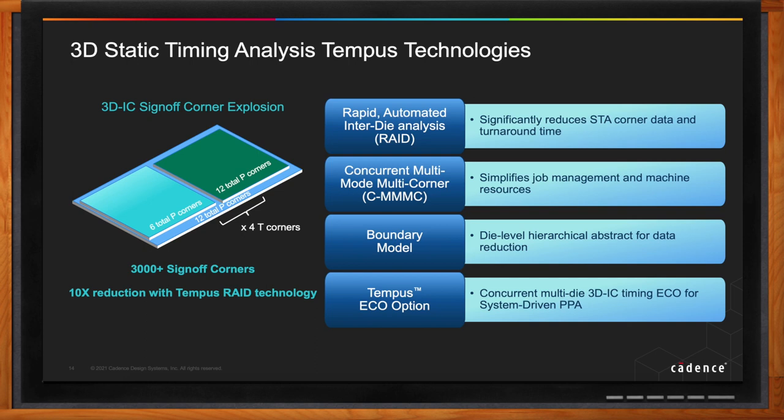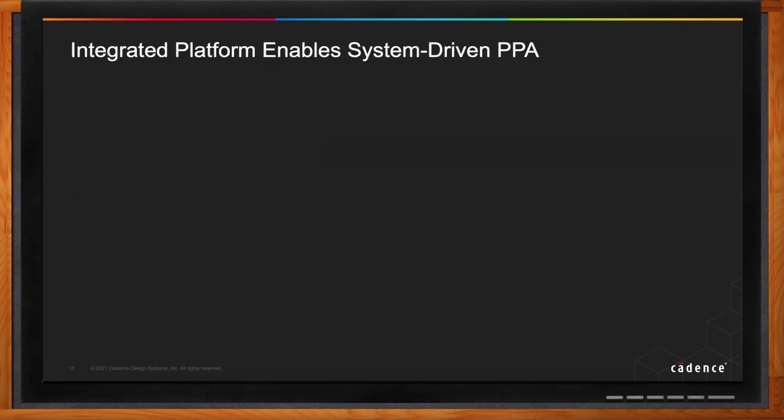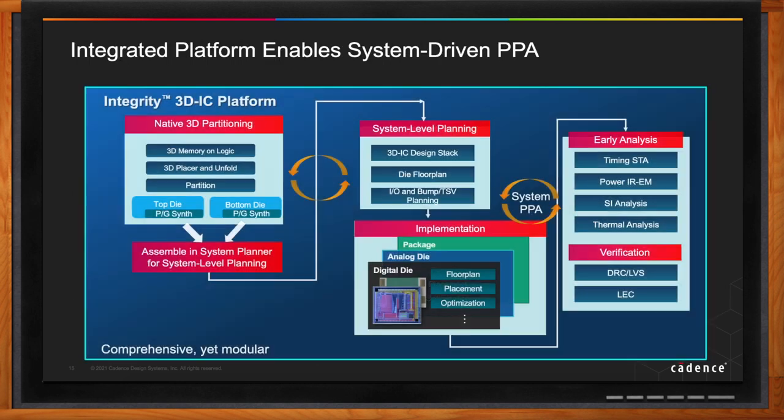PPA is a common theme here on Chalk Talk — how does this new platform address PPA? Whether we're doing 2D or 3D design, it's very important to make it optimal in terms of high performance; it should have the lowest power and the best area so that it's manufacturable.